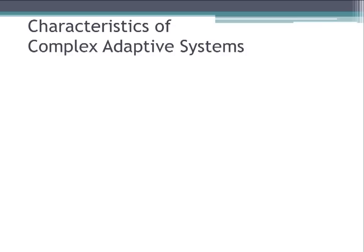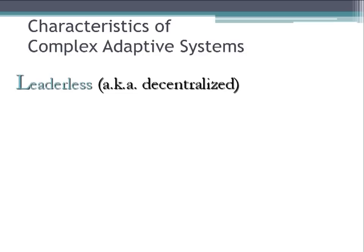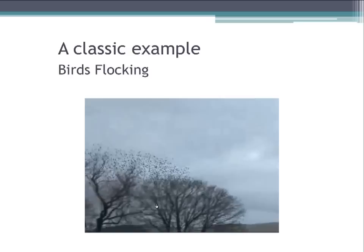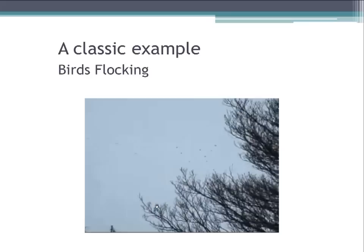Let's look at some characteristics of complex systems. Complex systems are leaderless, meaning there is no leader telling all the other agents what to do. Another way to put this is by saying that the system is decentralized. A classic example: residents in Patterbridge have been spending their winter afternoons watching millions of starlings as they sweep and gather for their evening roost.